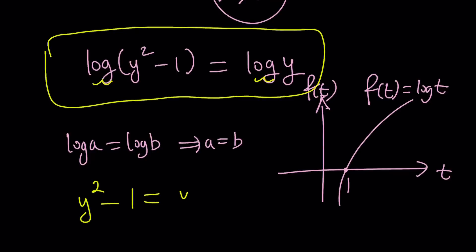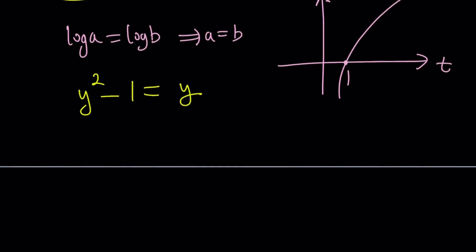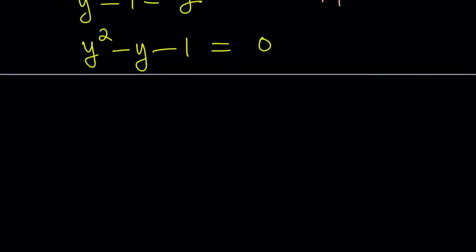There's only one solution to this, and that is when the arguments are equal. So y squared minus 1 equals y is the only, or are the only solutions, I should say, at this point. Because that's quadratic, it's going to give us two solutions. So, let's go ahead and simplify this. Subtract y from both sides and make it a full quadratic. Use the quadratic formula.